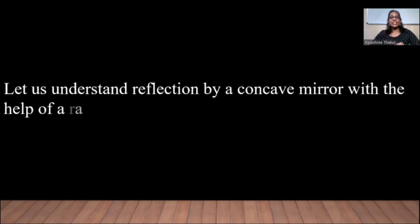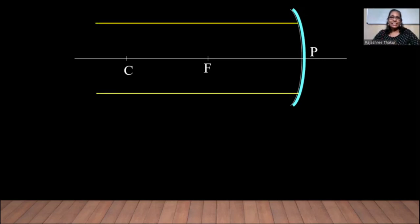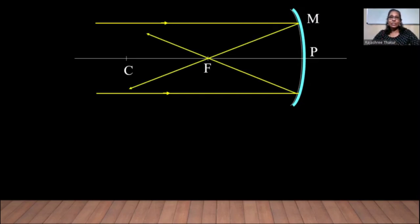Let us understand reflection by a concave mirror with the help of a ray diagram. Consider a concave mirror with the principal axis, the pole of the mirror, and points F and C marked on the principal axis. C is the center of curvature. If two rays are incident on the mirror parallel to the principal axis, after reflection they pass through the point F.